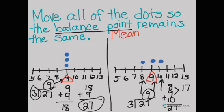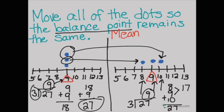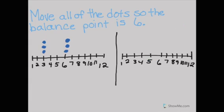Three goes into twenty-seven nine times, so I have moved all of my dots so that my balance point is the same. I just moved one dot over here to the left of my balance point and one dot to the right of my balance point.